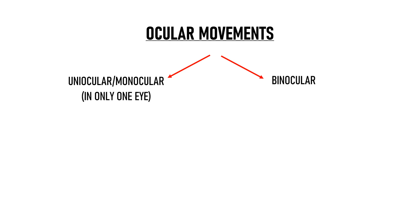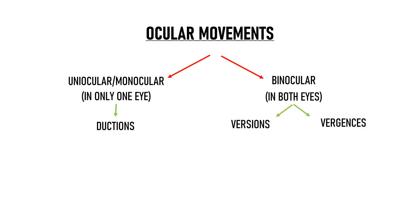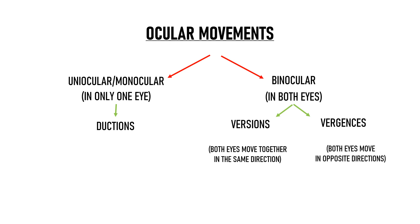Uniocular Movements are movements seen in only one eye irrespective of what's happening in the opposite eye, while Binocular Movements occur when both the eyes move together. Uniocular Movements are also known as Ductions. Binocular Movements can be further subdivided into Versions and Vergences. Versions occur when both eyes move together in the same direction, while Vergences occur when the two eyes move in the opposite direction.